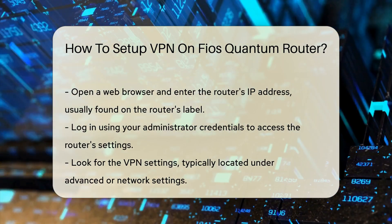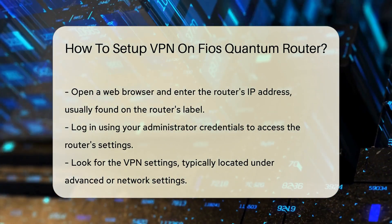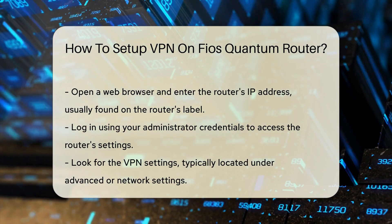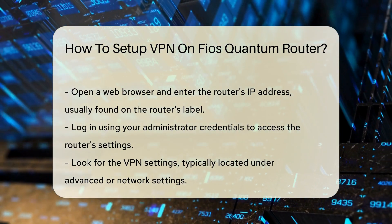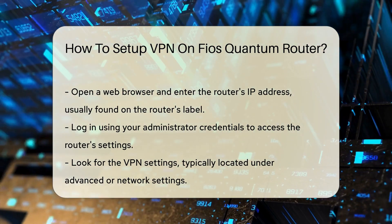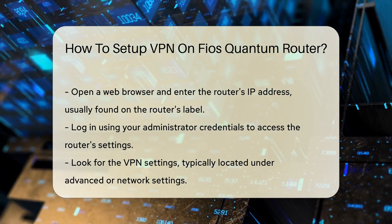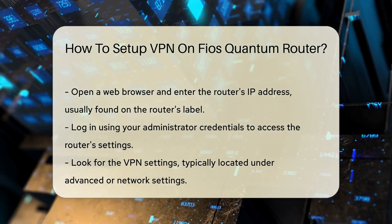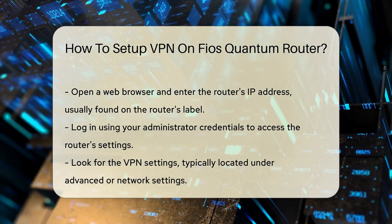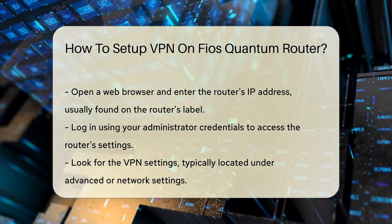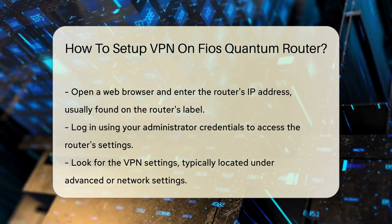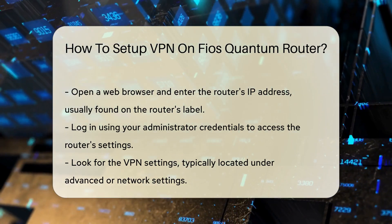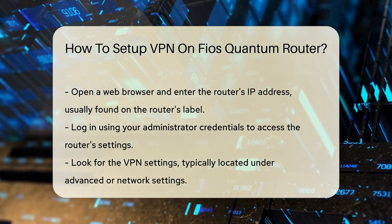Once logged in, locate the VPN settings. This section may be found under Advanced Settings or Network Settings. Some Fios Quantum Routers may require firmware updates to enable VPN functionality. Always check for the latest firmware to ensure compatibility.